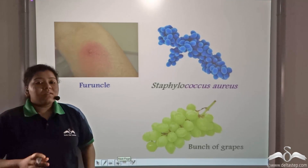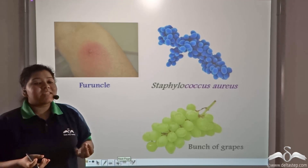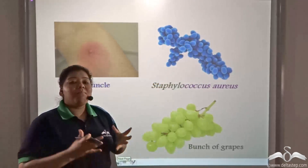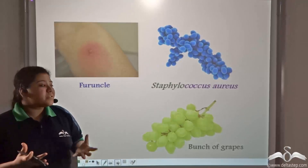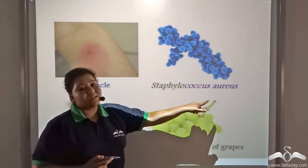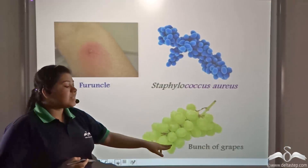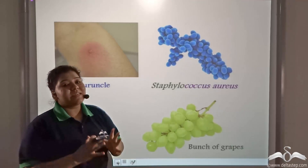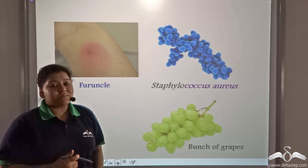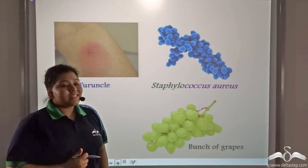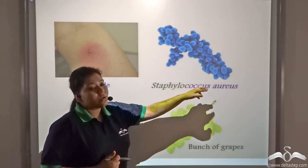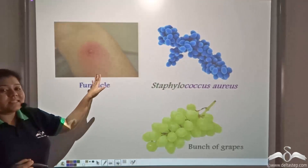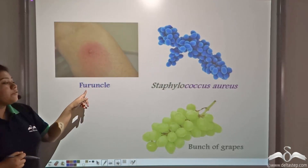When these ball-like bacteria form an aggregate that looks like a bunch of grapes, it is known as Staphylococcus, where 'Staphylo' means a bunch of grapes and 'Coccus' means spherical or ball-shaped. One such bacteria is Staphylococcus aureus, which causes a disease in humans known as furuncle.